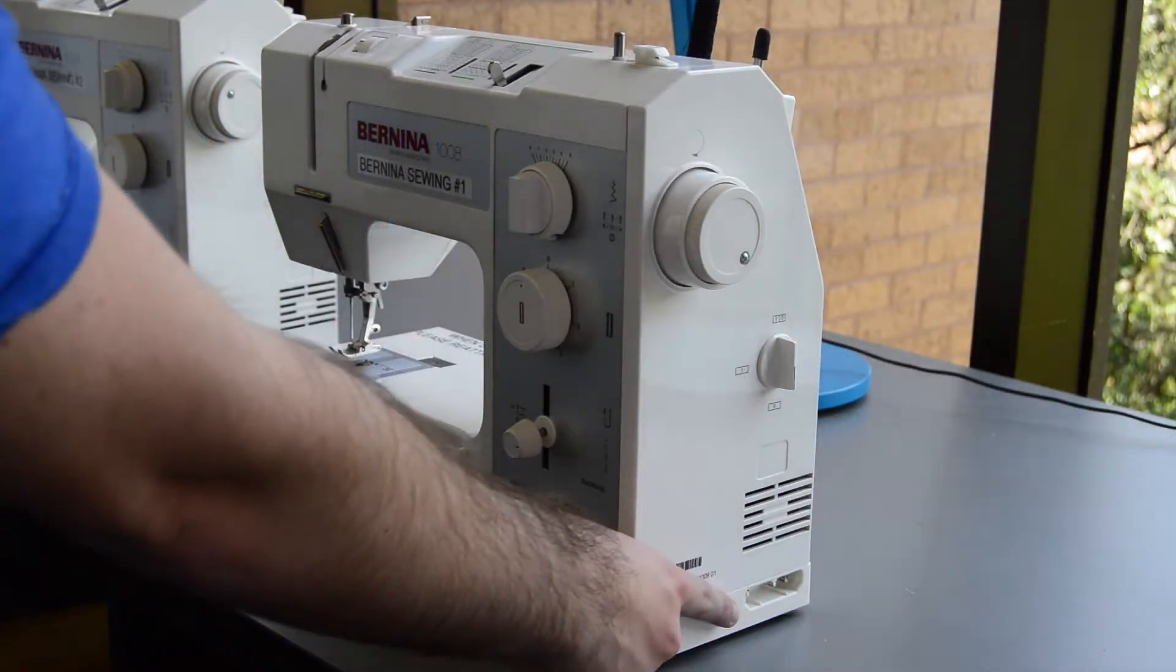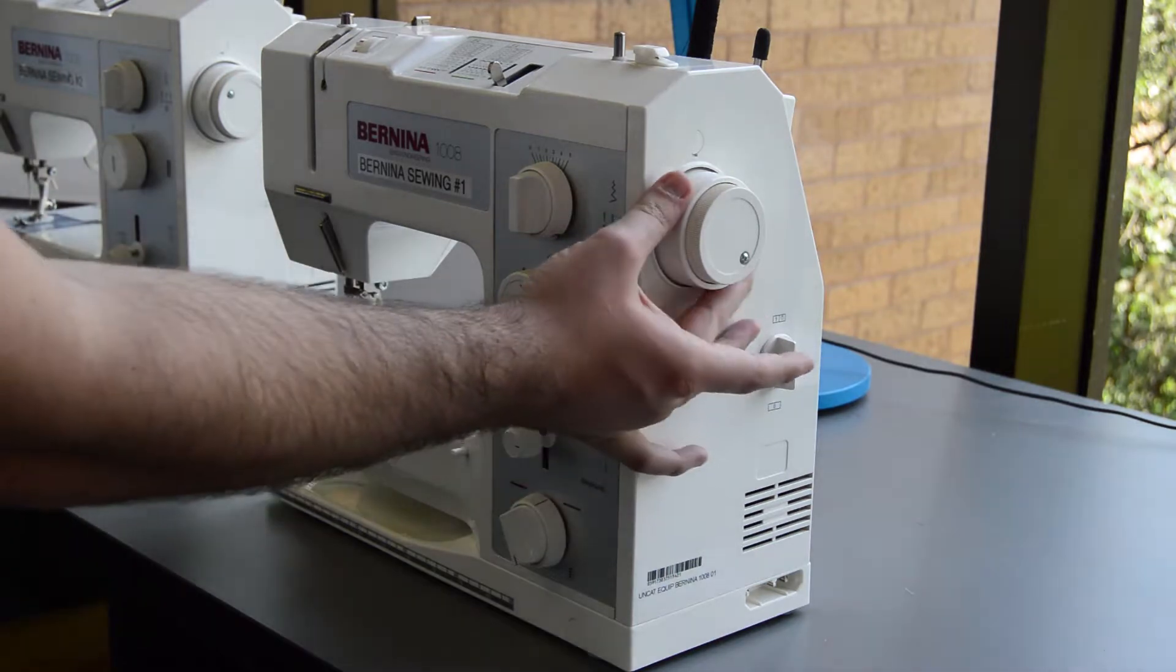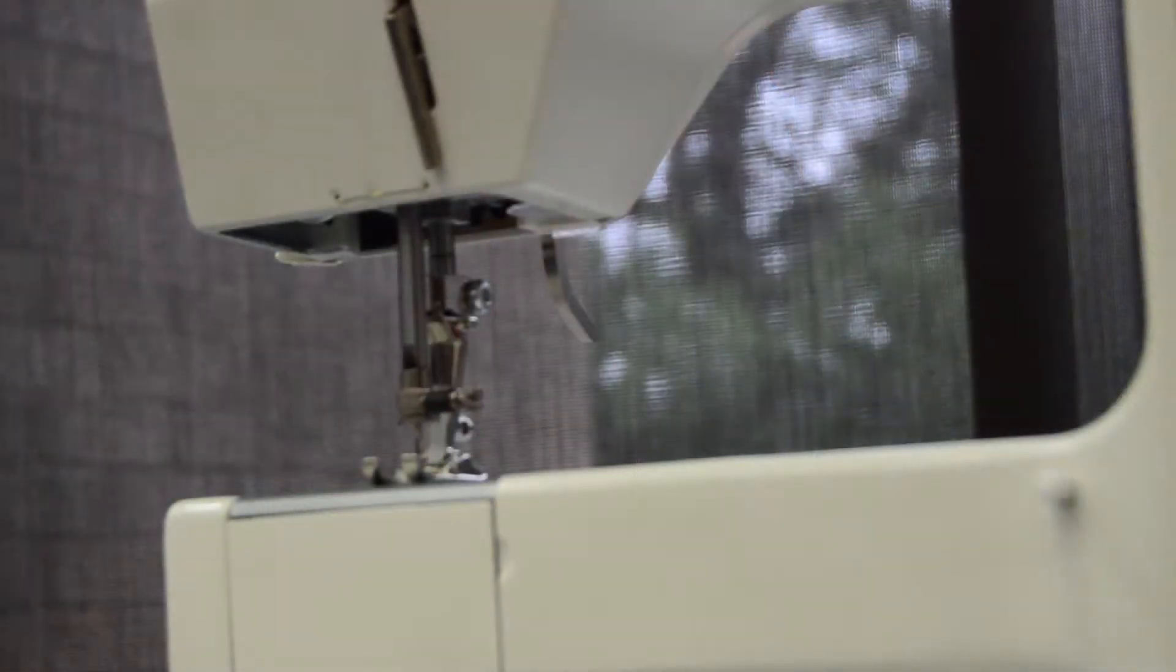On the right side of the Bernina we have the port to plug in the power cable, the power switch, and the hand wheel which is turned to manually raise and lower the needle.